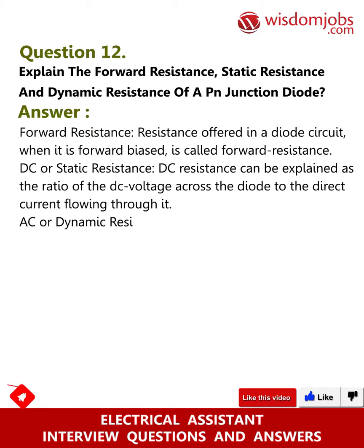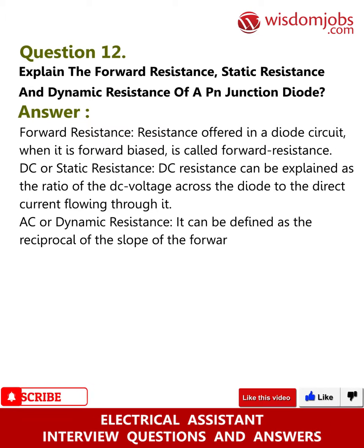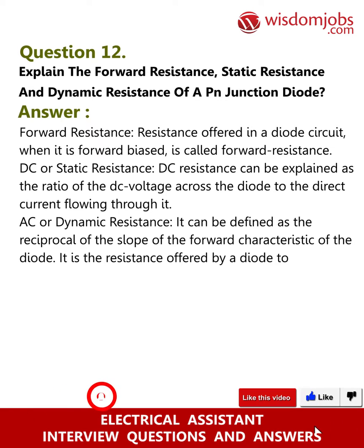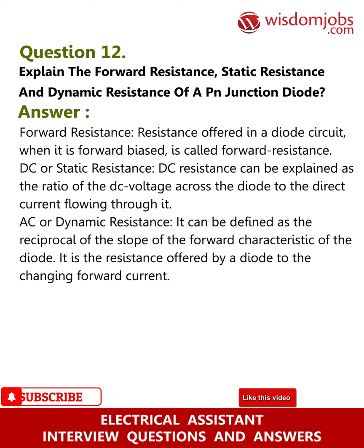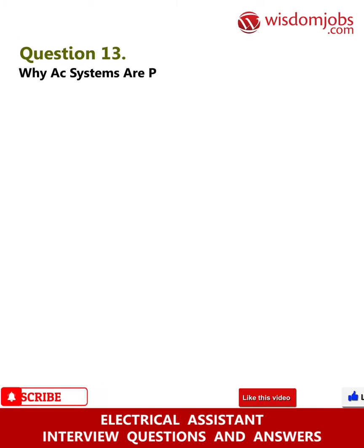AC or dynamic resistance: It can be defined as the reciprocal of the slope of the forward characteristic of the diode. It is the resistance offered by a diode to the changing forward current.